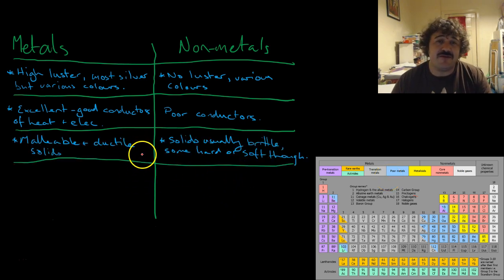Malleable and ductile. Metals, they bend, you can hammer them into a shape, that's what malleable means, or you can stretch them into a wire. That's what ductile means.